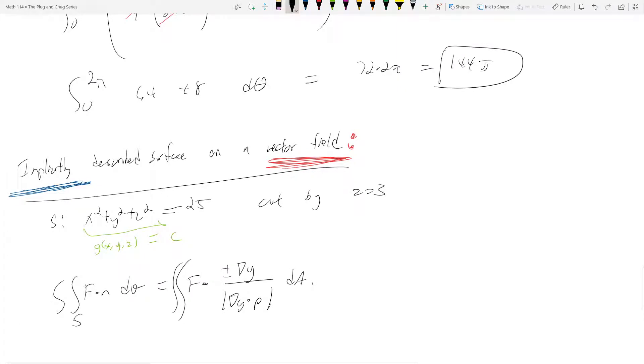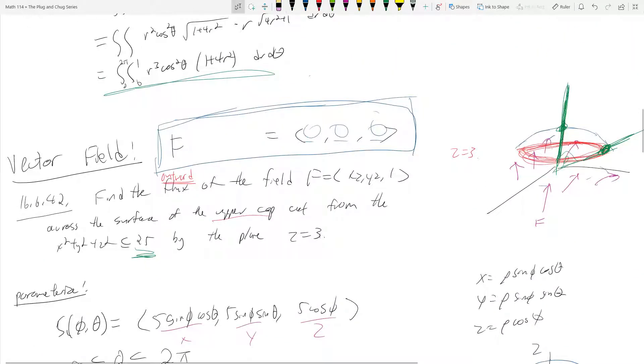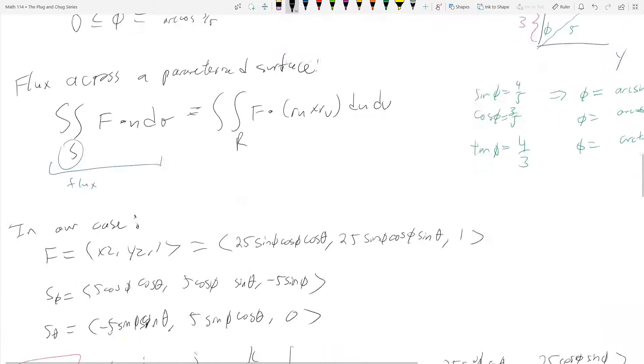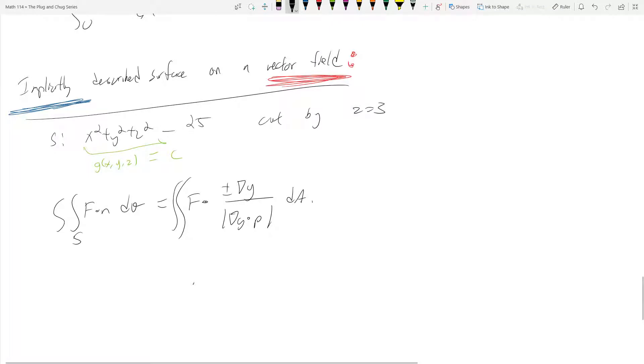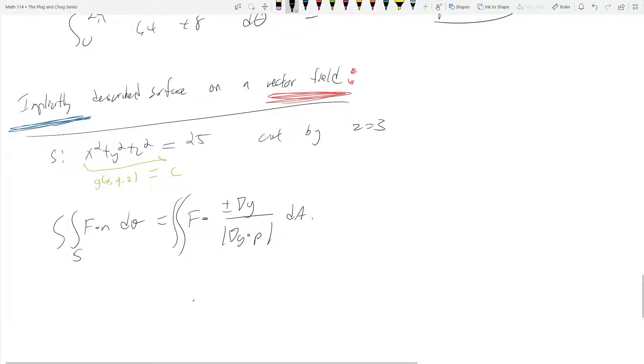Again, know why it's different. It's because in here this guy is a function, while in our case we have vector fields. So when you have an implicitly described surface, so what does that mean? So remember our surface was x squared plus y squared plus z squared equals 25, and it's cut by z equals 3.